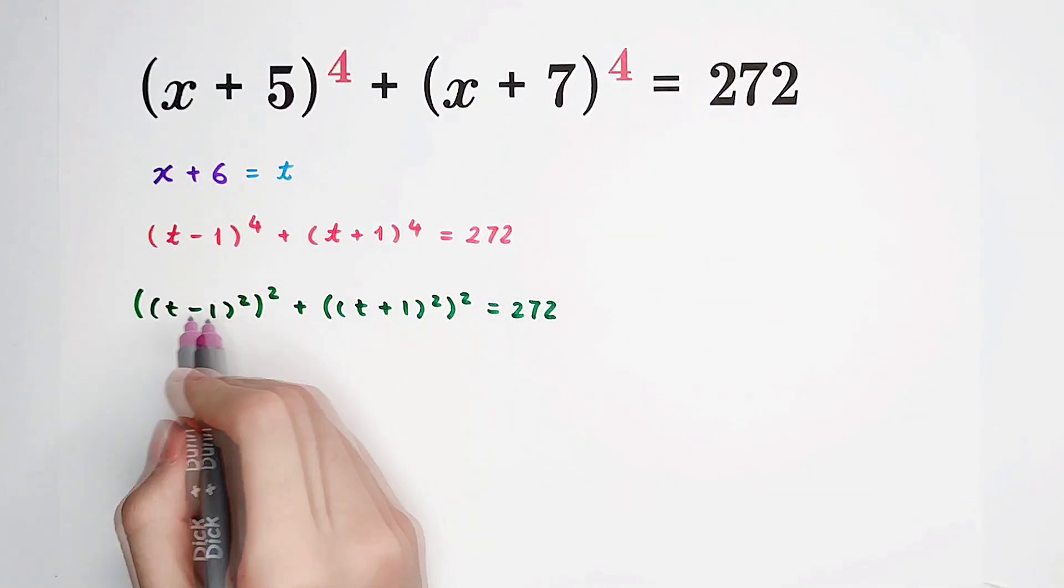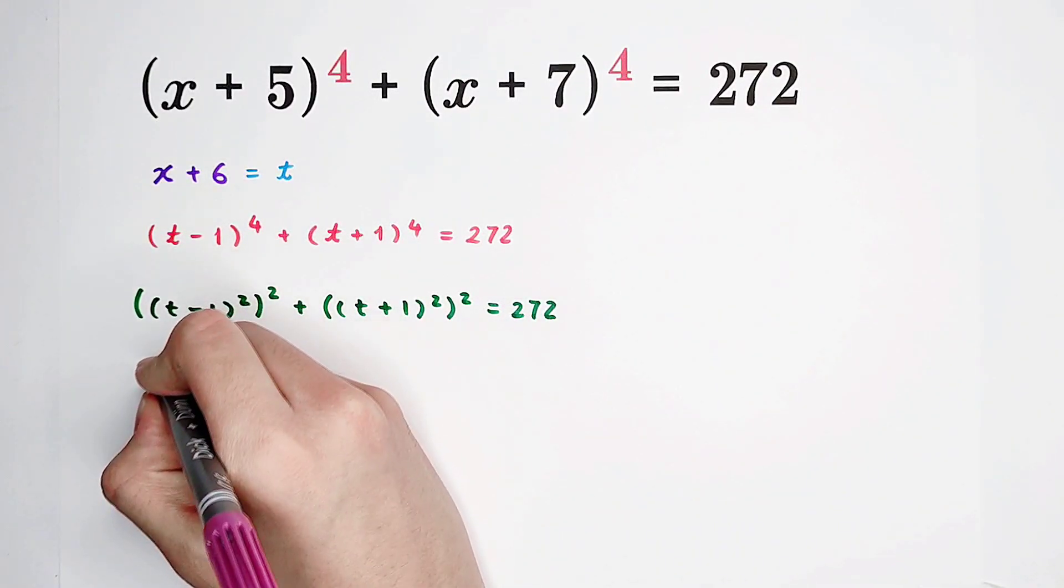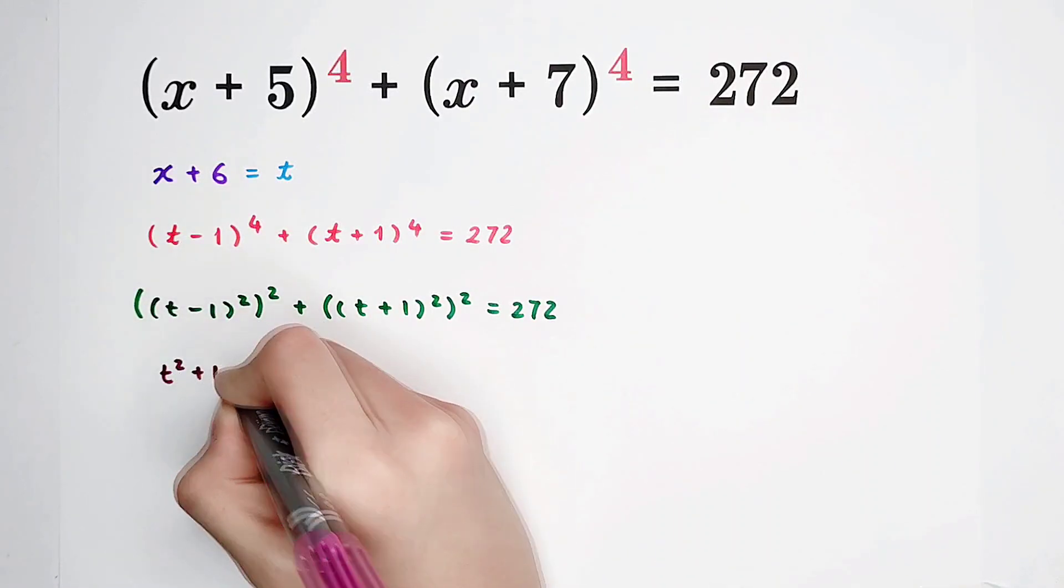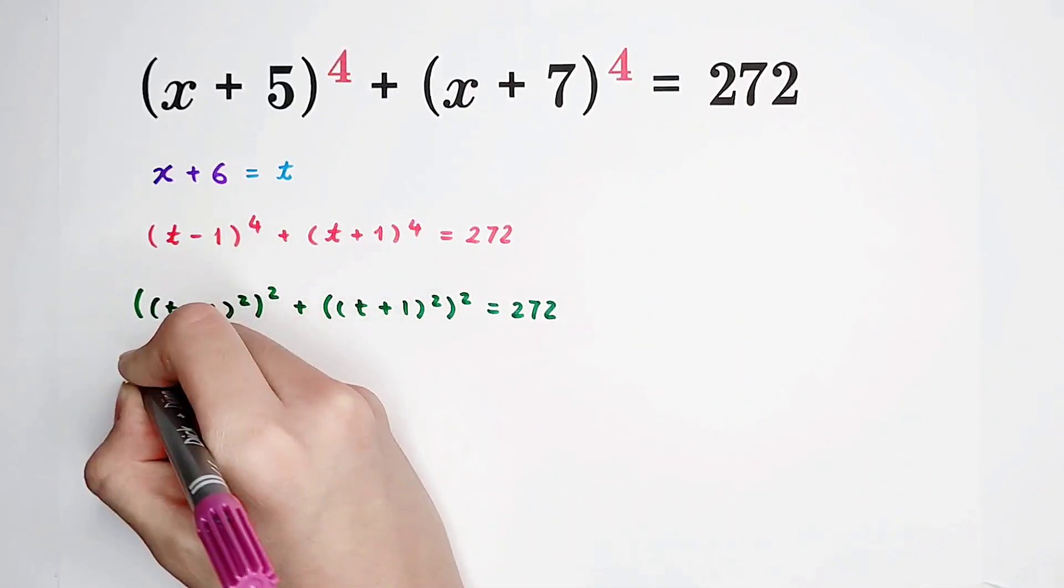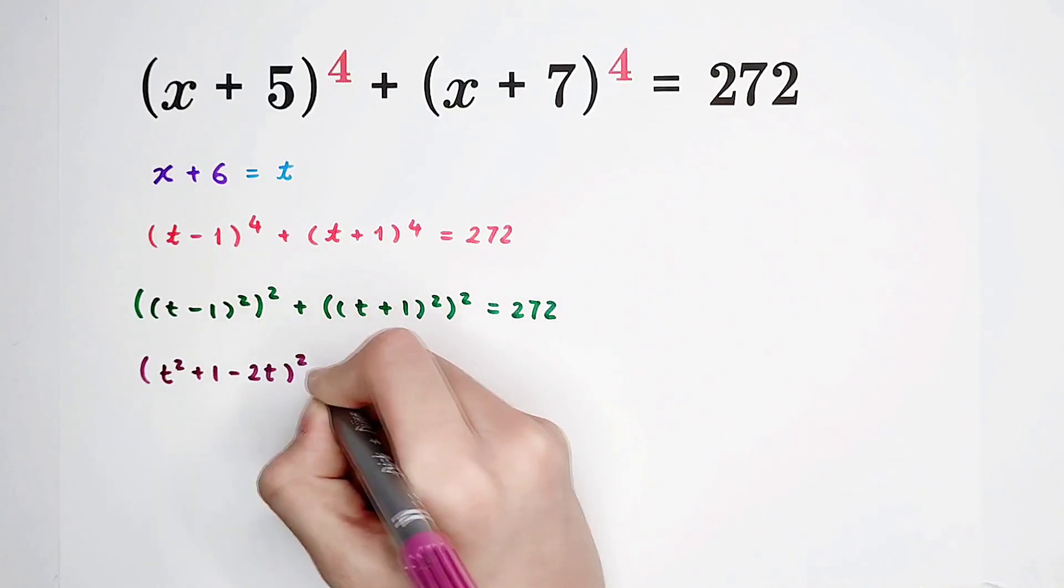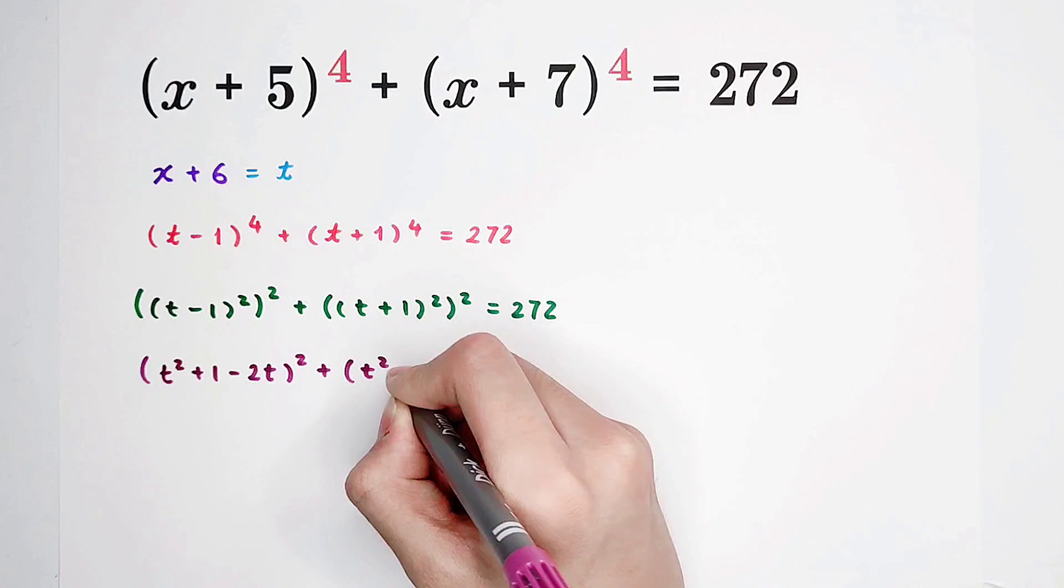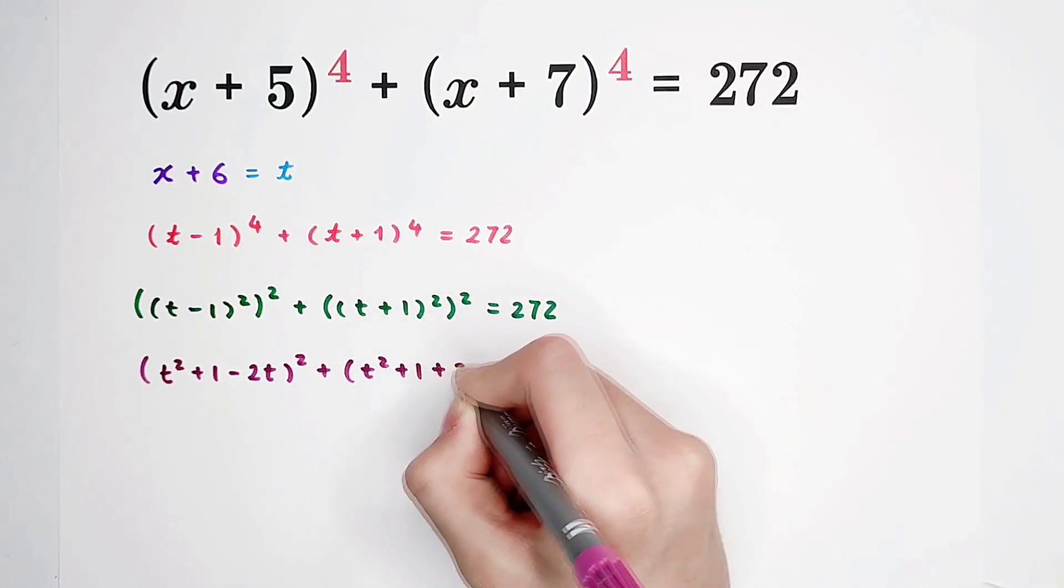t minus 1 all squared is t squared plus 1 minus 2t. t plus 1 all squared is t squared plus 1 plus 2t.